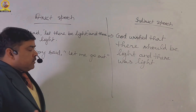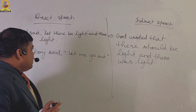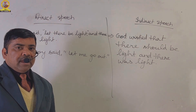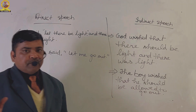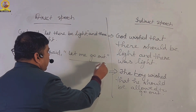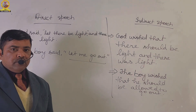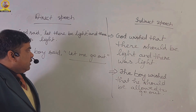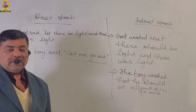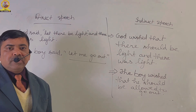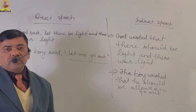I have taken the second example in direct speech: 'The boy said, let me go out.' — लड़के ने कहा मुझे बाहर जाने दो. By using the sentence 'let me go out,' we are requesting or telling someone to allow us to go out. This sentence is used to take permission. It is a type of request.